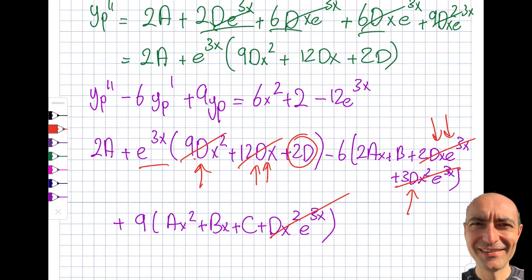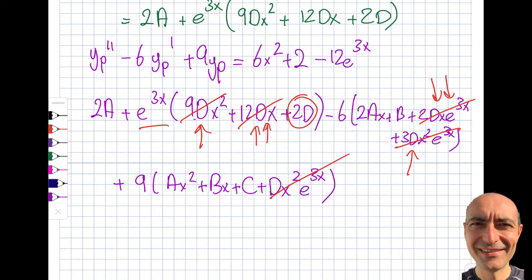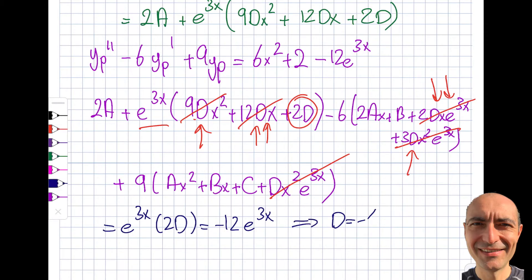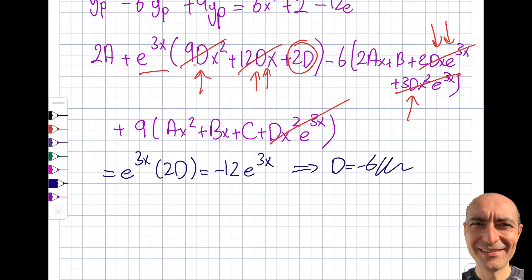With all the x² and x terms in the e^(3x) group cancelling, what remains is 2d·e^(3x) equals minus 12·e^(3x), giving us d equals minus 6. So we have the d coefficient.